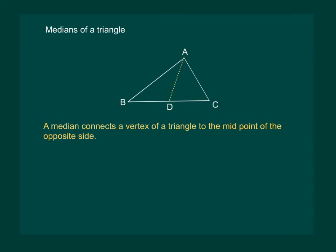Also notice that a median divides the side into two equal parts. Like here, AD divides BC into two equal parts, that means BD is equal to DC.